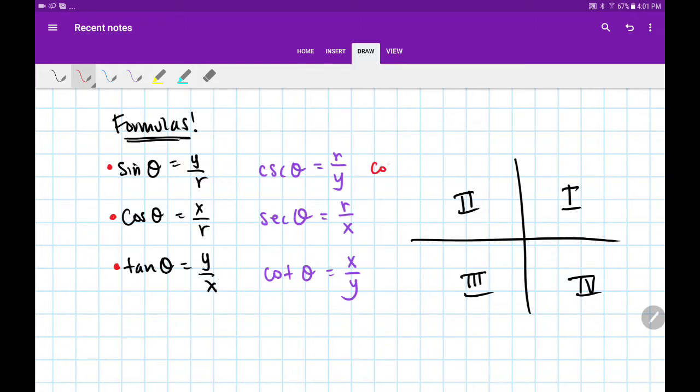They're pronounced cosecant, secant, and cotangent. They use the same letters x, y, and r, but they're the reciprocals of our first three.